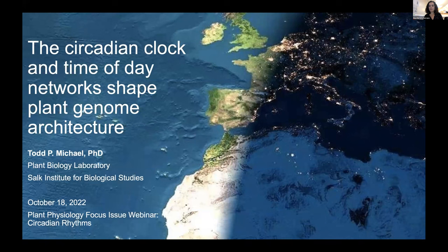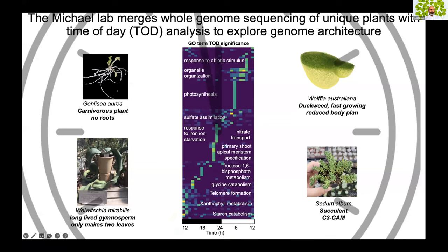Thank you for the invite and thank the editors for putting together this special issue. This talk and the article in the special issue is basically a culmination of many, many years of observations of plant genomes. My group mostly focuses on sequencing plant genomes — with an eye towards really strange plants like the carnivorous plant Genlisea aurea, which basically doesn't have any leaves and only has traps, and Welwitschia, that only makes two leaves its entire life cycle — or fast-growing minimal plants like duckweeds. A very specific area we're interested in is CAM photosynthesis.